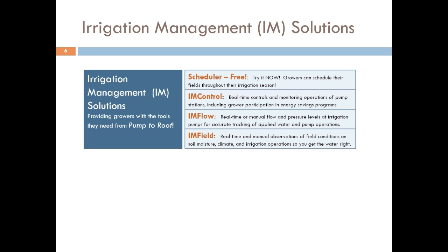A quick rundown of what the IAM solutions are. The IAM product is the carrier for all of our different solutions that give our growers the tools they need to manage their water from pump to root. There's the scheduling application — a free application anyone can get to, now also available with your IAM data. IAM Control is our pump monitoring and control application. IAM Flow manages and monitors flow data across the farm. And IAM Field is where you collect real-time data from your soil moisture probes and weather stations.